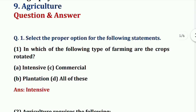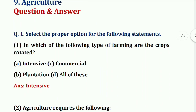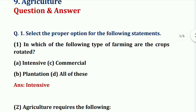First question: select the proper option for the following statements. In which of the following types of farming are the crops rotated? The options are intensive, commercial, plantation, or all of these. The answer is intensive farming.